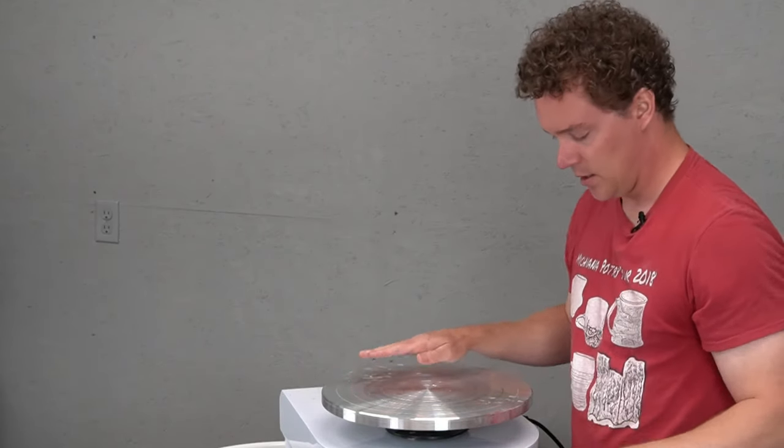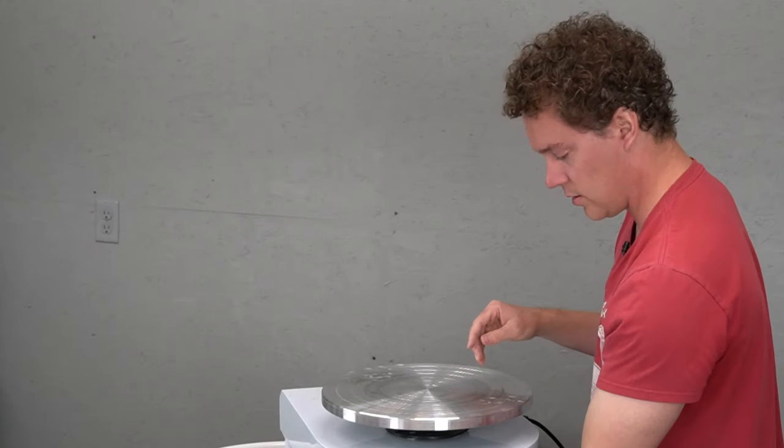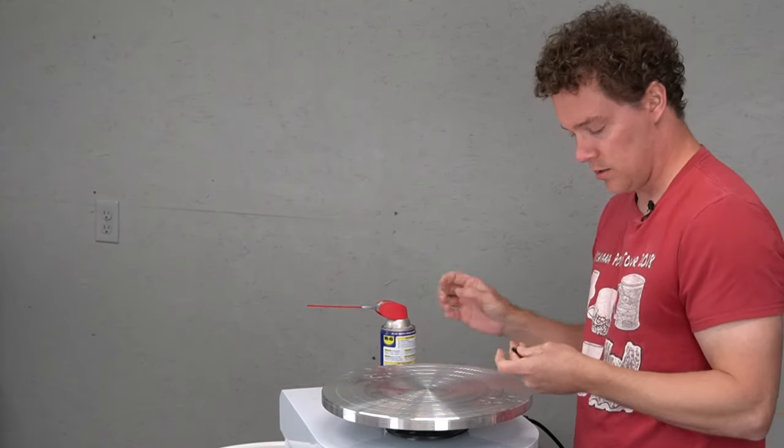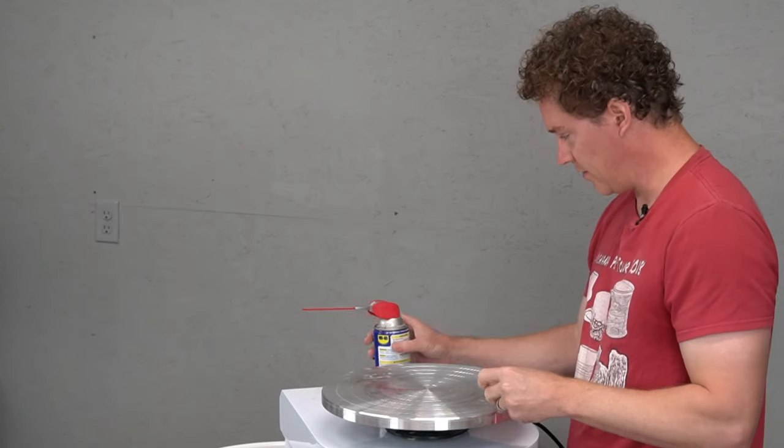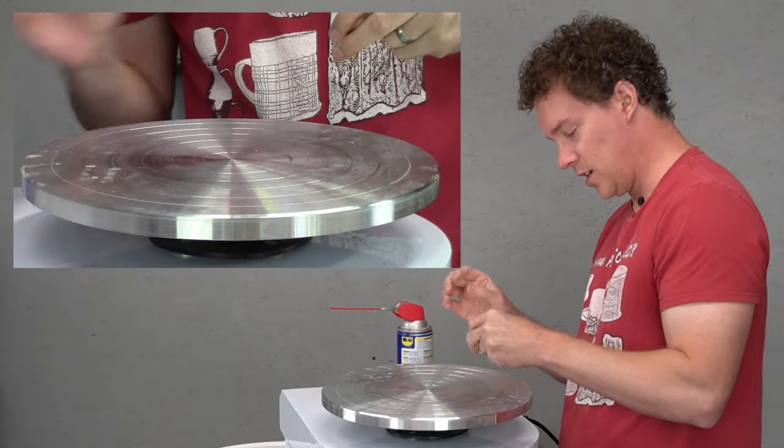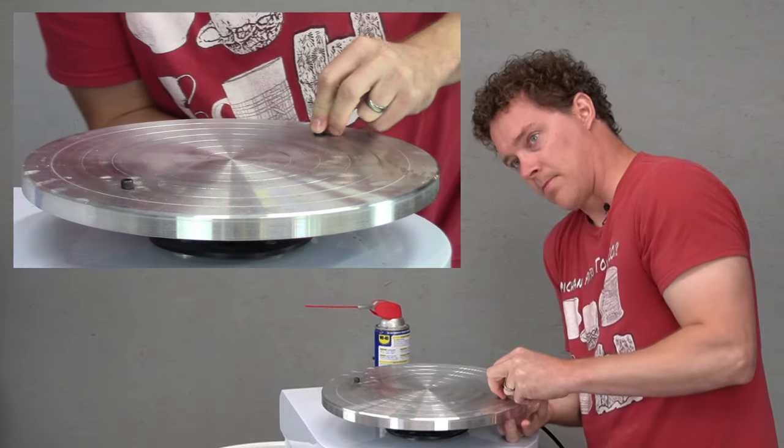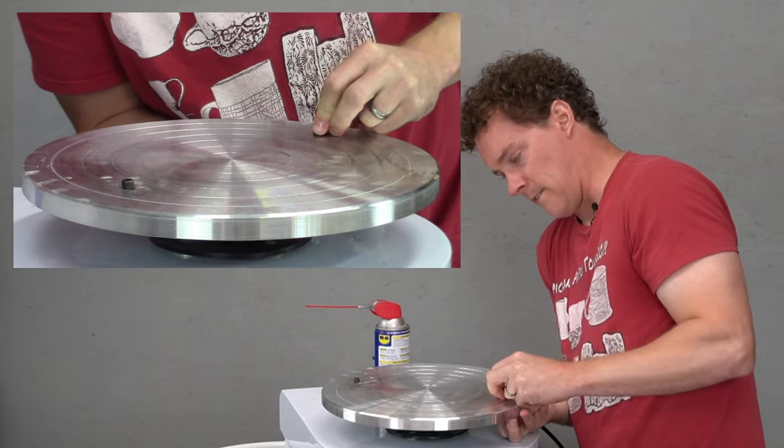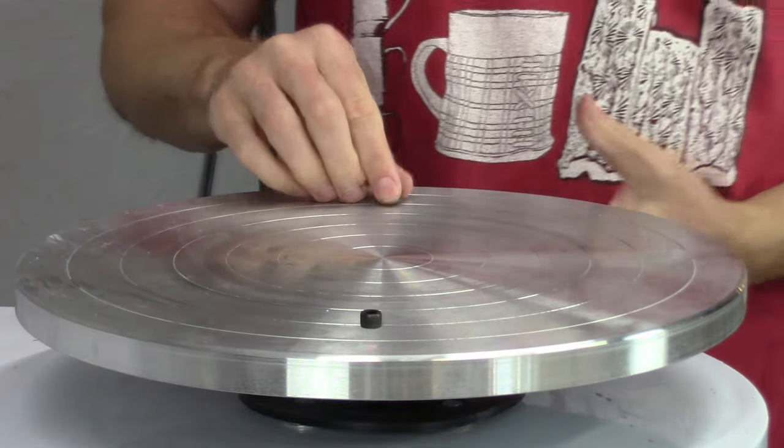All right. Got everything cleaned up. I'm going to put in the bat pins and tighten them down for the final time. I thought I'd add just a little bit of WD-40 just to help prevent rust. Okay. So now we've got some bat pins in.